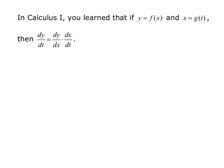In Calculus 1, you learned that if y equals f of x and x equals g of t, then dy/dt equals dy/dx times dx/dt. You may have learned this as: if y equals f of u, then y prime equals f prime of u times u prime. In other words, if y is a composite function, we're essentially taking the derivative of the outside function times the derivative of the inside function.